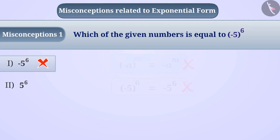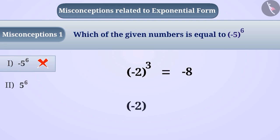The correct understanding is that if the exponent of a negative number is an odd number, the result is a negative number. But if the exponent of a negative number is an even number, the result is a positive number.